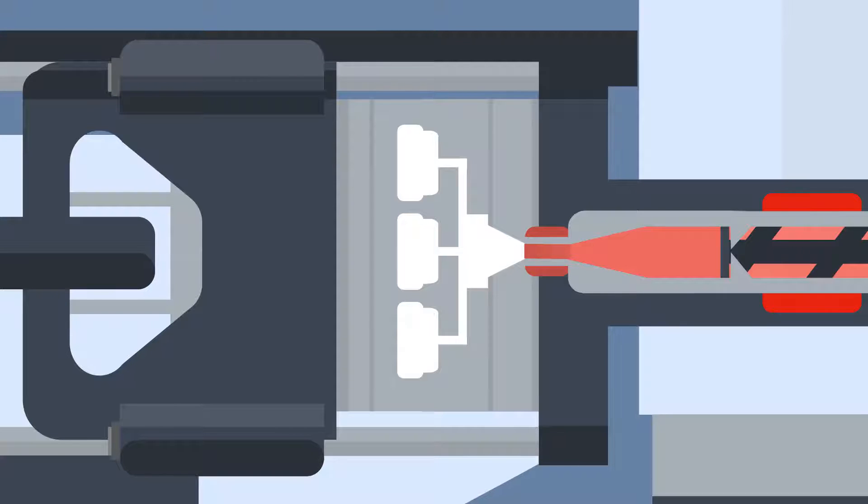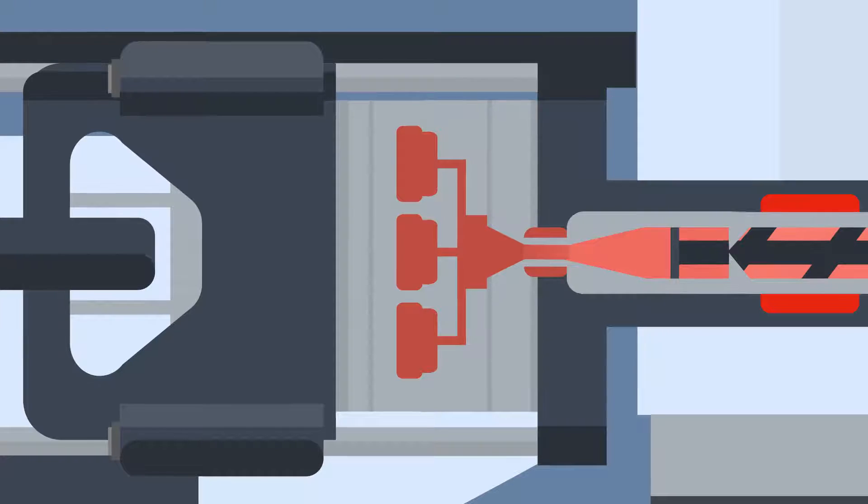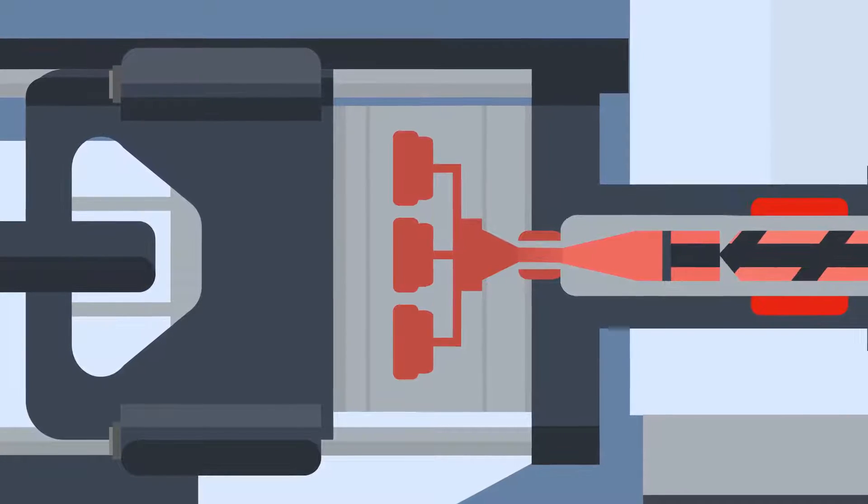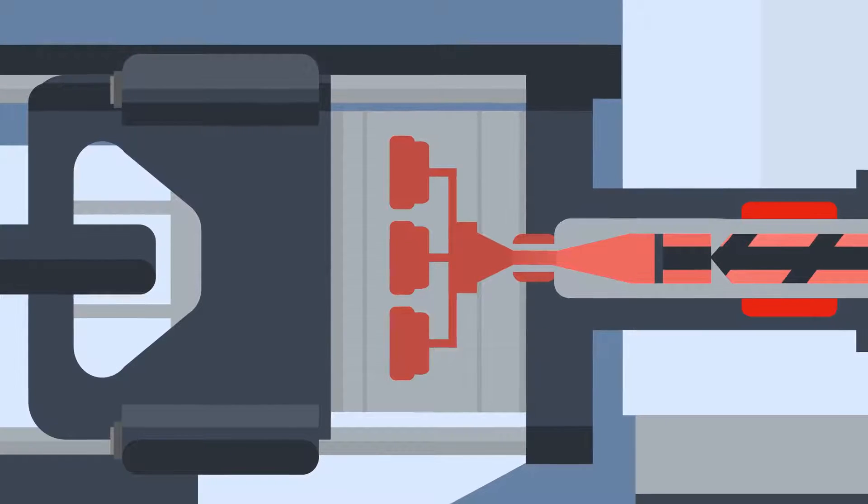Once the clamp pressure is at an optimum level, the plastic is injected by a screw at high speed and pressure into the cavity. A gate inside the tool helps to control the flow of the plastic.